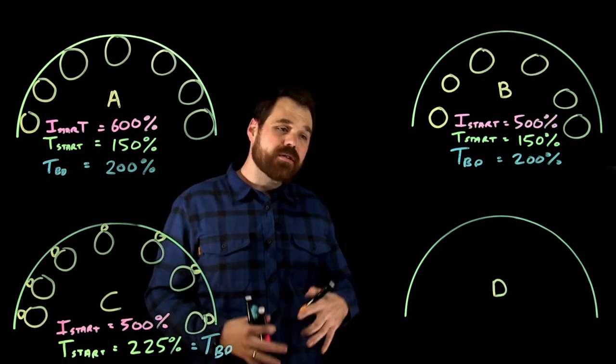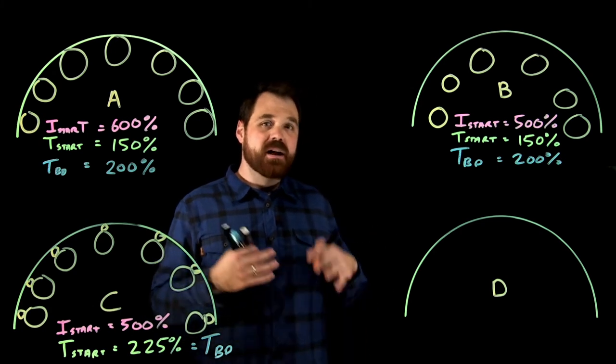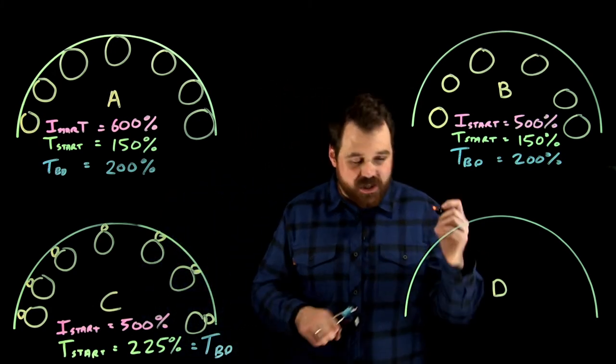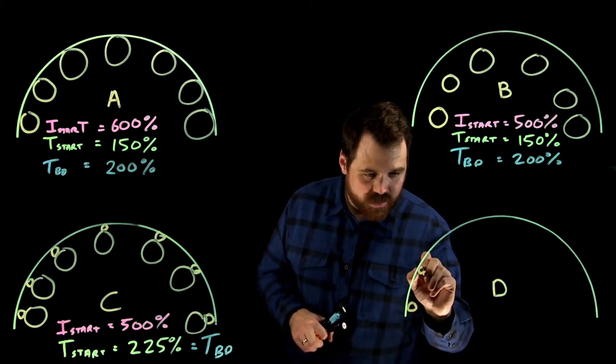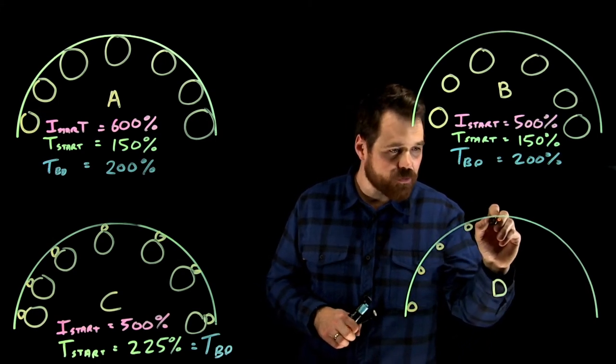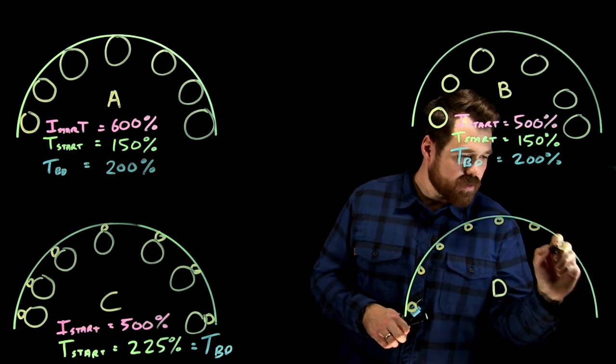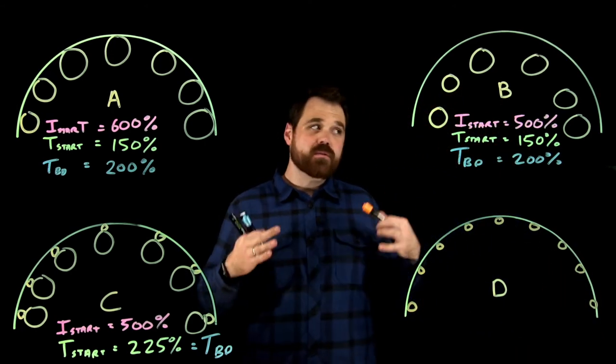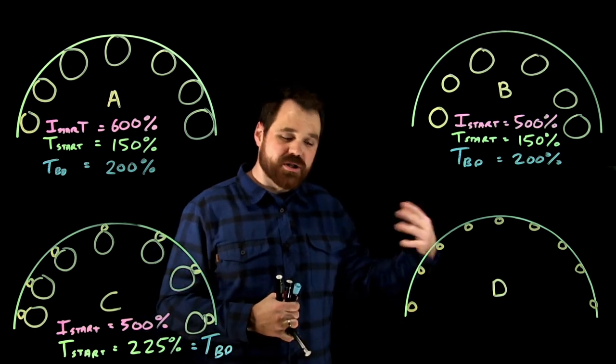That brings us to our fourth NEMA rotor design. Now our fourth NEMA rotor design is the D. The way the D works is I have a bunch of bars, little rotor bars, small rotor bars, close to the surface.